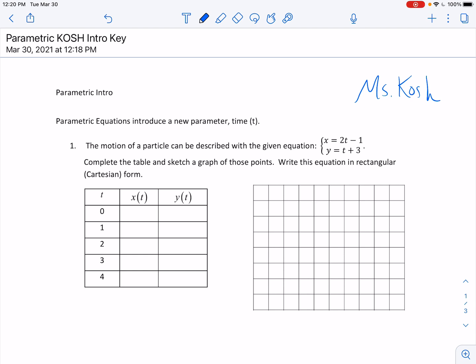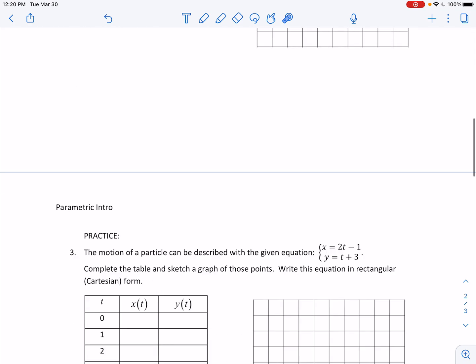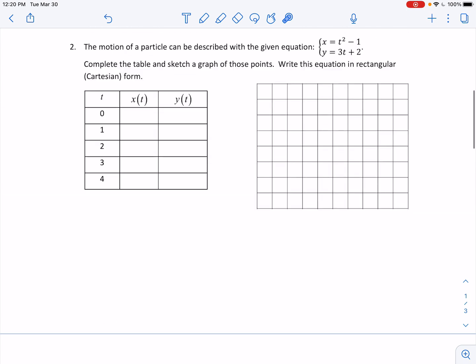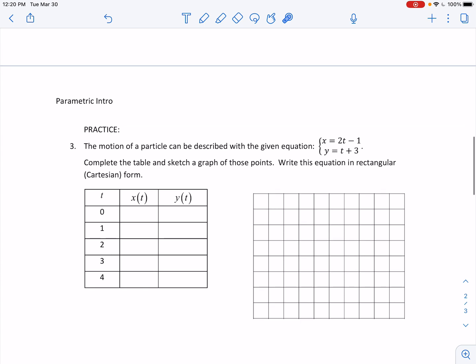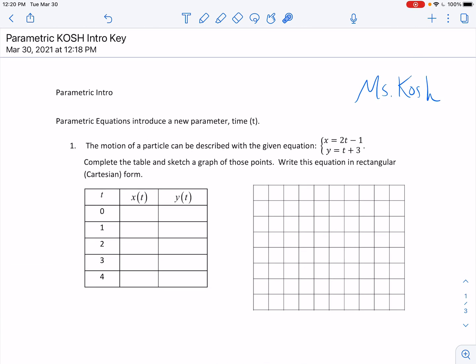A parametric equation is a type of equation that introduces a new parameter, and typically that parameter is the variable t that represents time. It doesn't have to be t or time, but typically we will have x defined in terms of t and y defined in terms of t. So you'll notice right here we've got x equals 2t minus 1 and y equals t plus 3. So what we're going to do is begin by making a table and saying, okay, what happens when we plug in different t values? Since we're talking time, we don't usually talk about negative time, so my t values begin at 0.